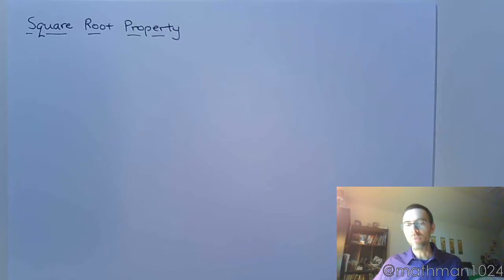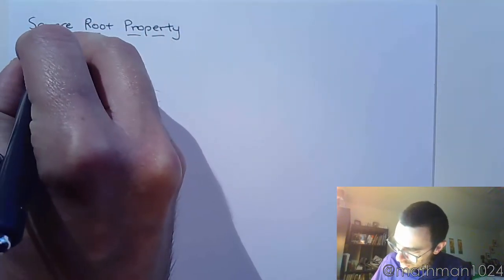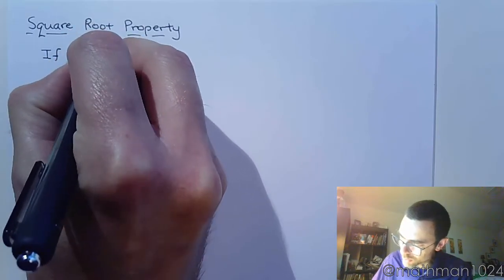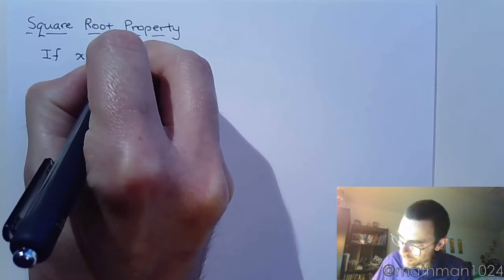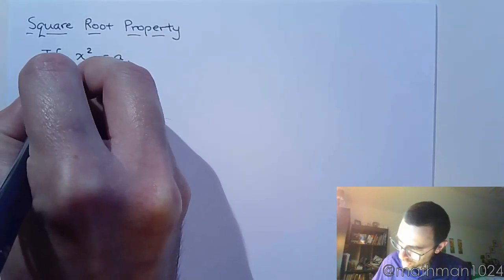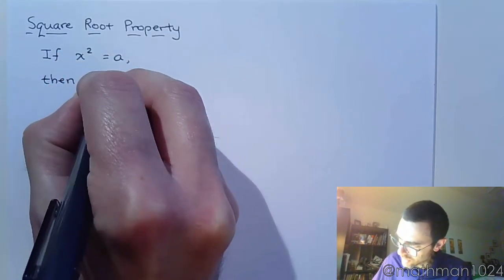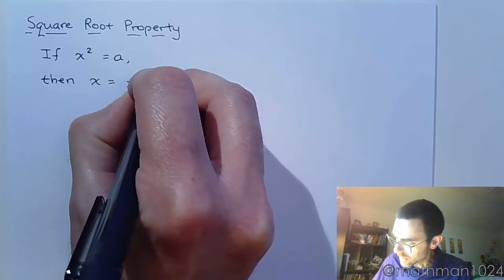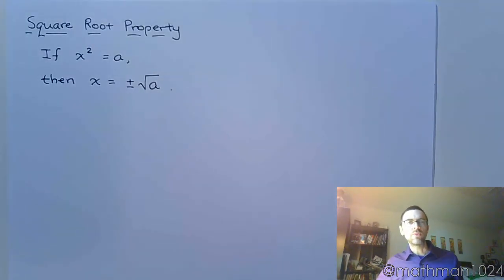Here's what the square root property says. It says that if you have a variable expression squared equal to a number, then the conclusion is that x will equal plus or minus the square root of that number.